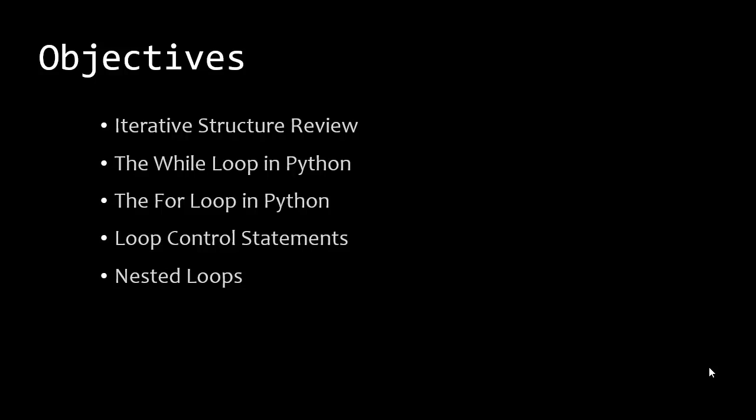So we'll talk about what the iterative structure is and how it works in Python. In Python, there are two types of different loops — that's basically what we're talking about when we're talking about the iterative structure — the while loop and the for loop. We'll talk about some control statements that we can put into our loops, and then we'll talk about some nested loops and how we can do those also, very similar to other courses. So let's get into it.